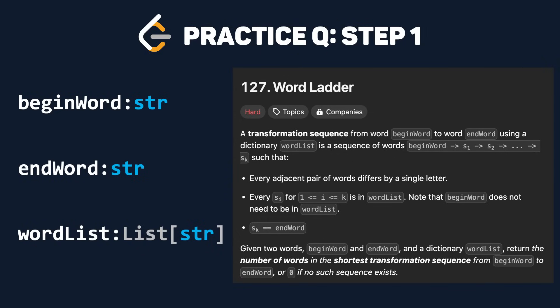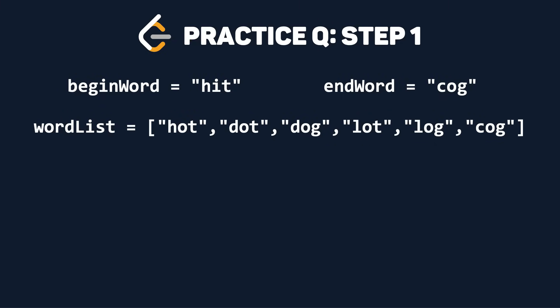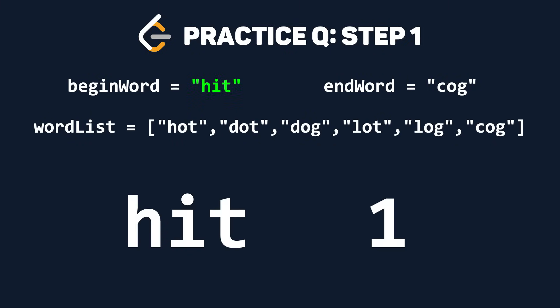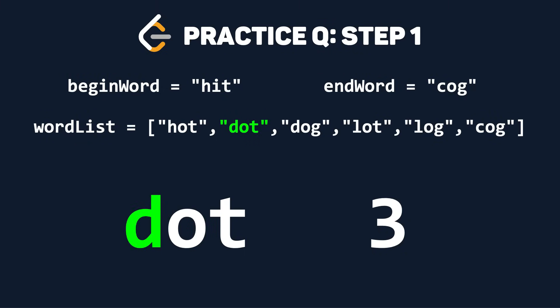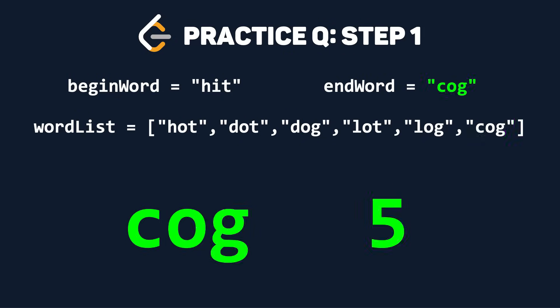First, let's simplify. The inputs are two strings — begin word and end word. We can change one letter at a time in the begin word to change it to a word in our word list until we reach our end word. Our output is an integer representing how many words it took to get from begin word to end word, unless this was impossible, in which case our output is zero. For our test case, our starting word is 'hit' and our ending word is 'cog'. Hit becomes hot, hot becomes dot, and as we keep doing this we progress through our word list, changing one letter at a time, until we finally get to cog — after five total words.